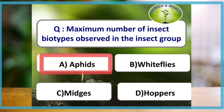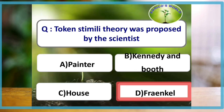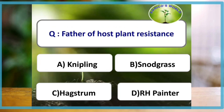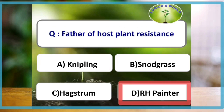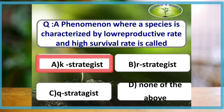Token stimuli theory was proposed by the scientist Fraenkel. Theory of chemosensory basis of host selection was proposed by Dethier. The father of host plant resistance is R. H. Painter.